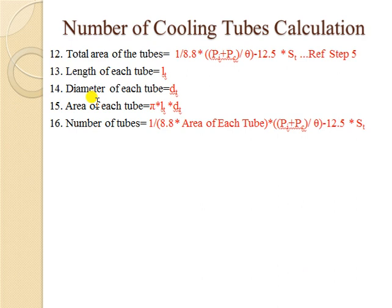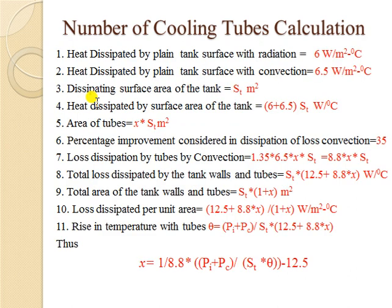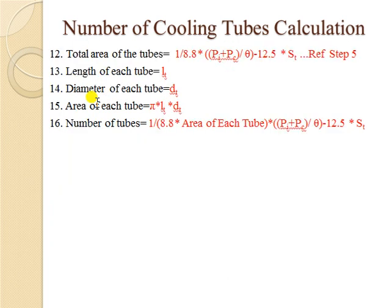In step 12, the total area of tubes is calculated by multiplying x by S_t (since tube area = x × S_t, as defined in step 5). If the length of each tube is L_t and the diameter is D_t, the area of one tube (a cylindrical surface) is π × L_t × D_t. With total tube area from step 12 and the area of each individual tube from step 15, the number of tubes required is calculated in step 16, achieving our target.